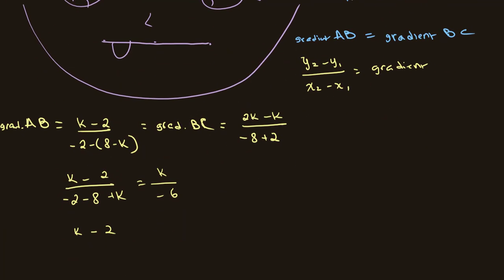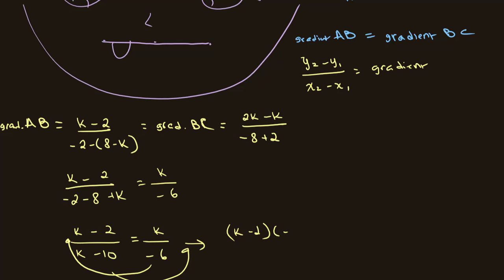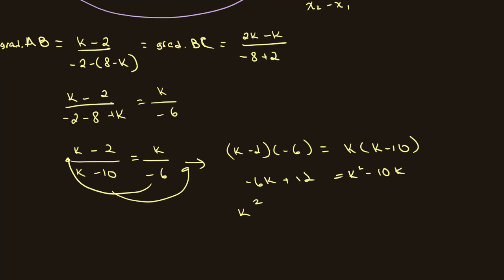We get (k minus 2) over (k minus 10) is equal to k over negative 6. Cross-multiplying, we get (k minus 2) times negative 6 equals k times (k minus 10), giving k squared minus 10k. Expanding and rearranging: negative 6k plus 12 equals 0, which simplifies to k squared minus 4k minus 12 equals 0.